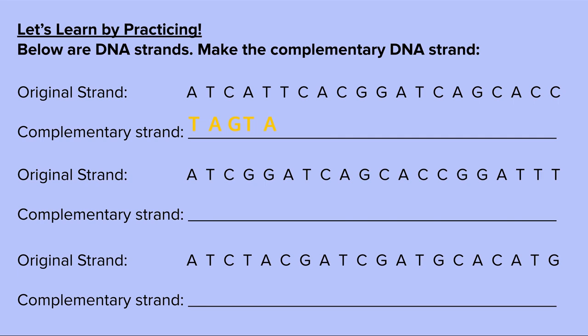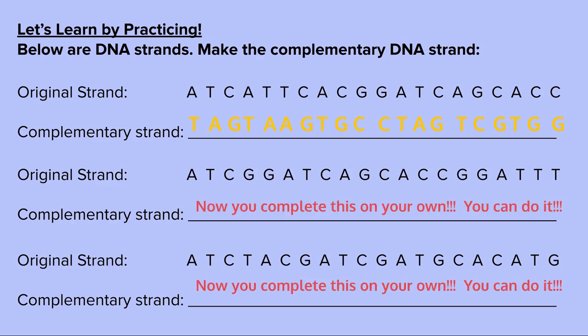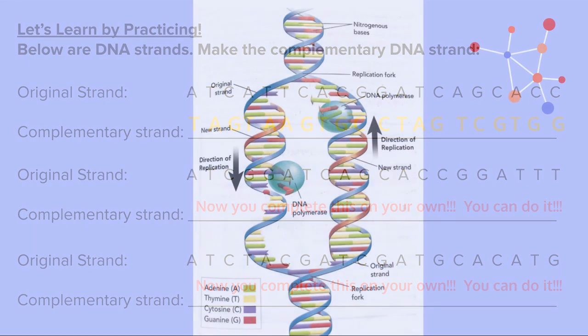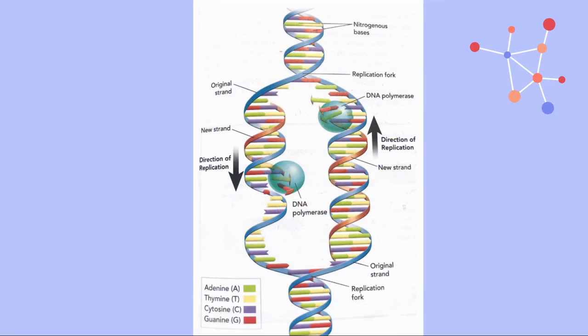T pairs with A, T pairs with A again, and this keeps going until we get our final complementary strand of DNA. That is exactly what DNA polymerase is doing. For your notes, I want you to finish the next two problems on your own — pause the video, use the same skills from the first example, and complete the complementary strands for the remaining two sequences.